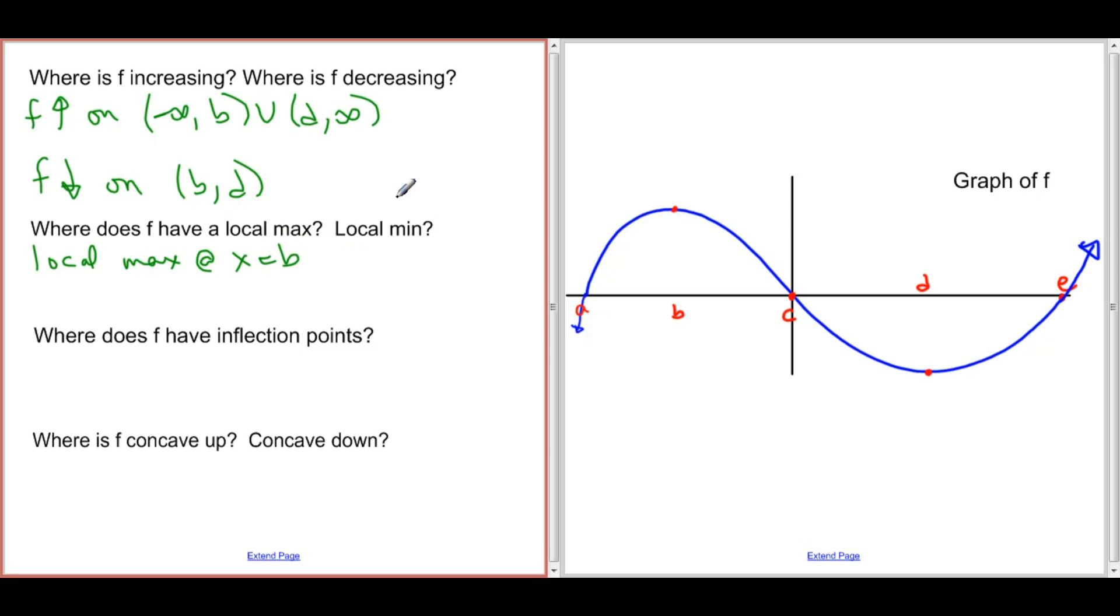Where do we have a local min? We have a local min when f prime changes from negative, so the slope is negative, to positive. We're looking at the graph of f. So f prime is the slope of f, and f prime is negative to positive at x equals d. So we have a local max at x equals d.